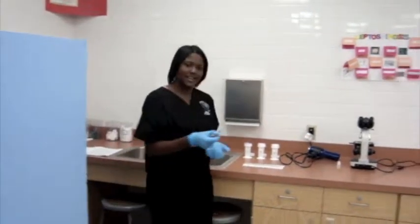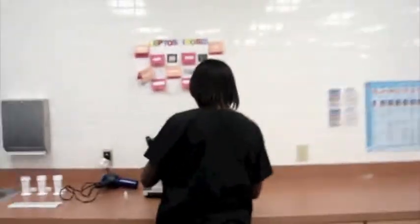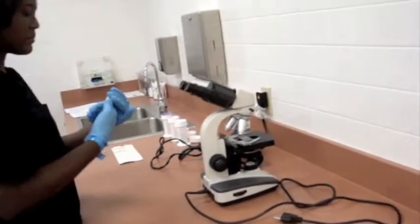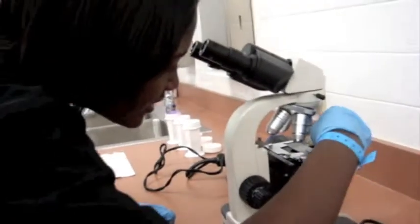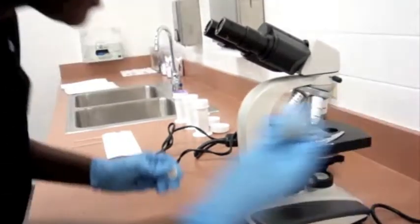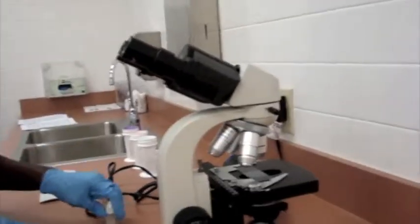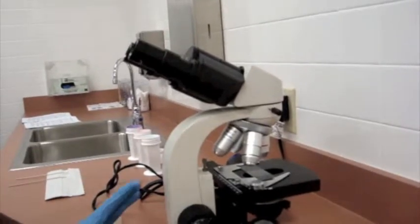Now we are ready to put it under the microscope. Put the slide onto the microscope, lock it in place, and add a drop of immersion oil. Now I am going to look through the microscope and scan for any yeast or bacteria.